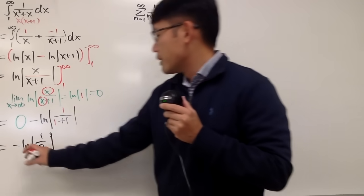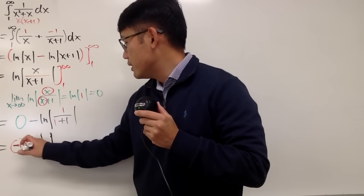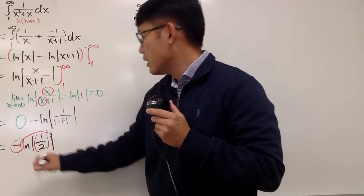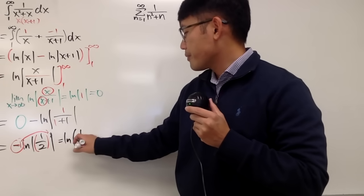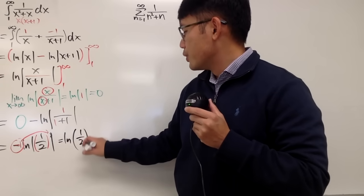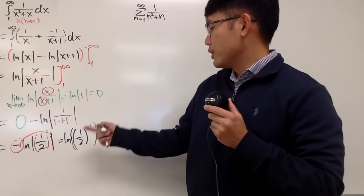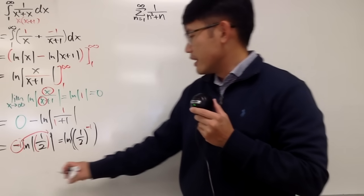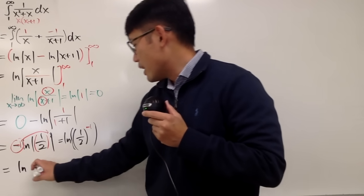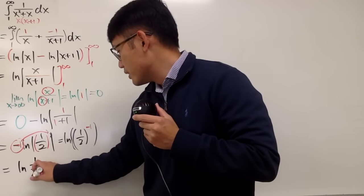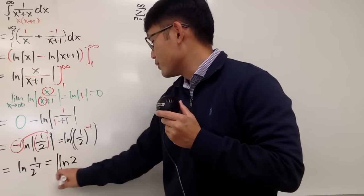The absolute value doesn't matter anymore. But the last thing is, this is just like a negative 1 exponent — you can put this as a power. So you are looking at natural log of one half to the negative 1 power. 1 half to the negative 1 is just 2, so all in all the answer is natural log of 2.